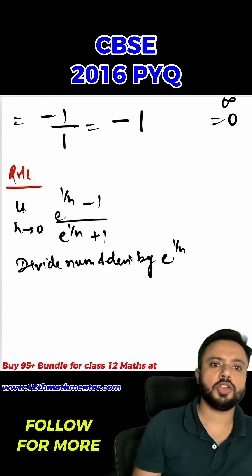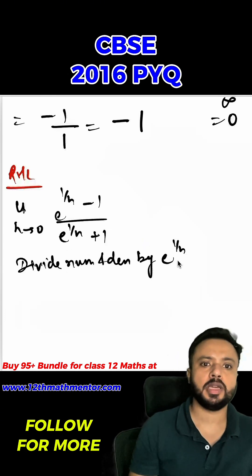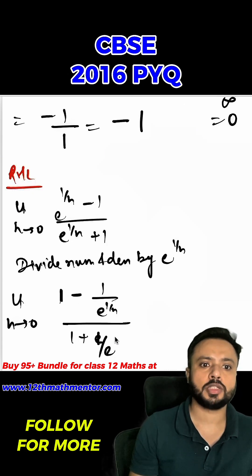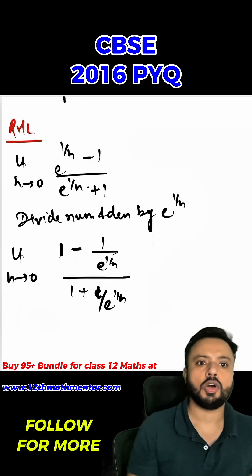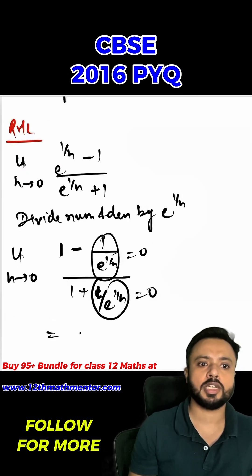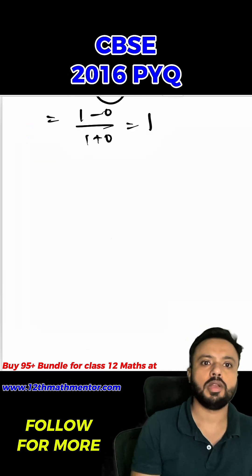To solve RHL, I am going to divide the numerator and denominator by e raised to the power one by h. When I divide, I get one minus one upon e raised to the power one by h, upon one plus one upon e raised to the power one by h. Now substituting h equal to zero, both one upon e raised to the power one by h terms become zero. So the RHL value is one minus zero upon one plus zero, which comes out to positive one.